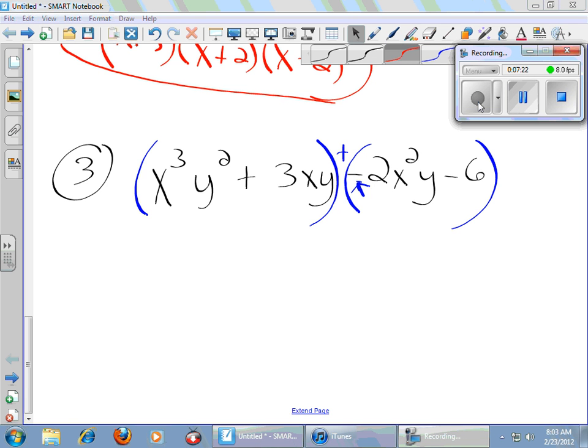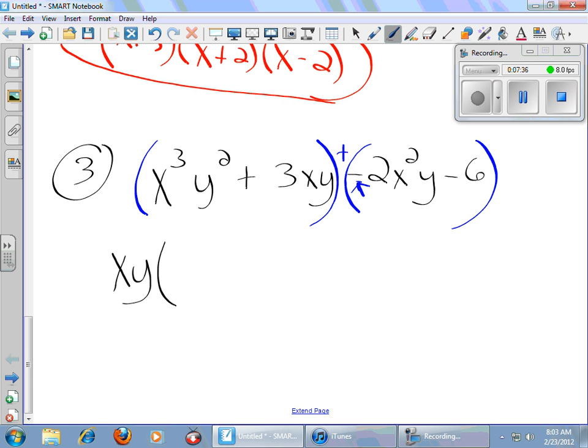So, what is the GCF of this first quantity? Well, it looks like an x is common. x is definitely common. It looks like a y is common. And I think that's it. So, I factor out a GCF from the x cubed y squared. And I'll be left with x squared y. I factor out a GCF of x, y from here. I'm left with a plus 3. I come over to this quantity. And it looks like the GCF is negative 2. If I factor out a GCF, I get x squared y plus 3. Remember, a negative divided by a negative is going to be a positive.